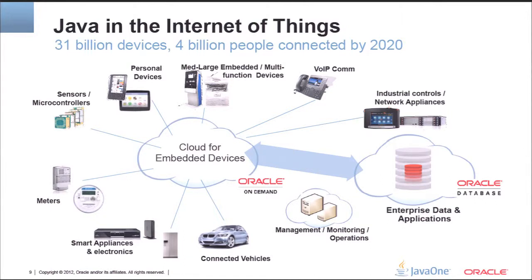So this is the vision Oracle has. Why is Oracle interested in embedded? The message is pretty simple: Oracle is an enterprise data-driven company. The more data that gets generated on the edge of the network and needs to be processed and stored, the better. It makes sense from an end-to-end perspective for Oracle to get involved in what's happening at the edge of the network.